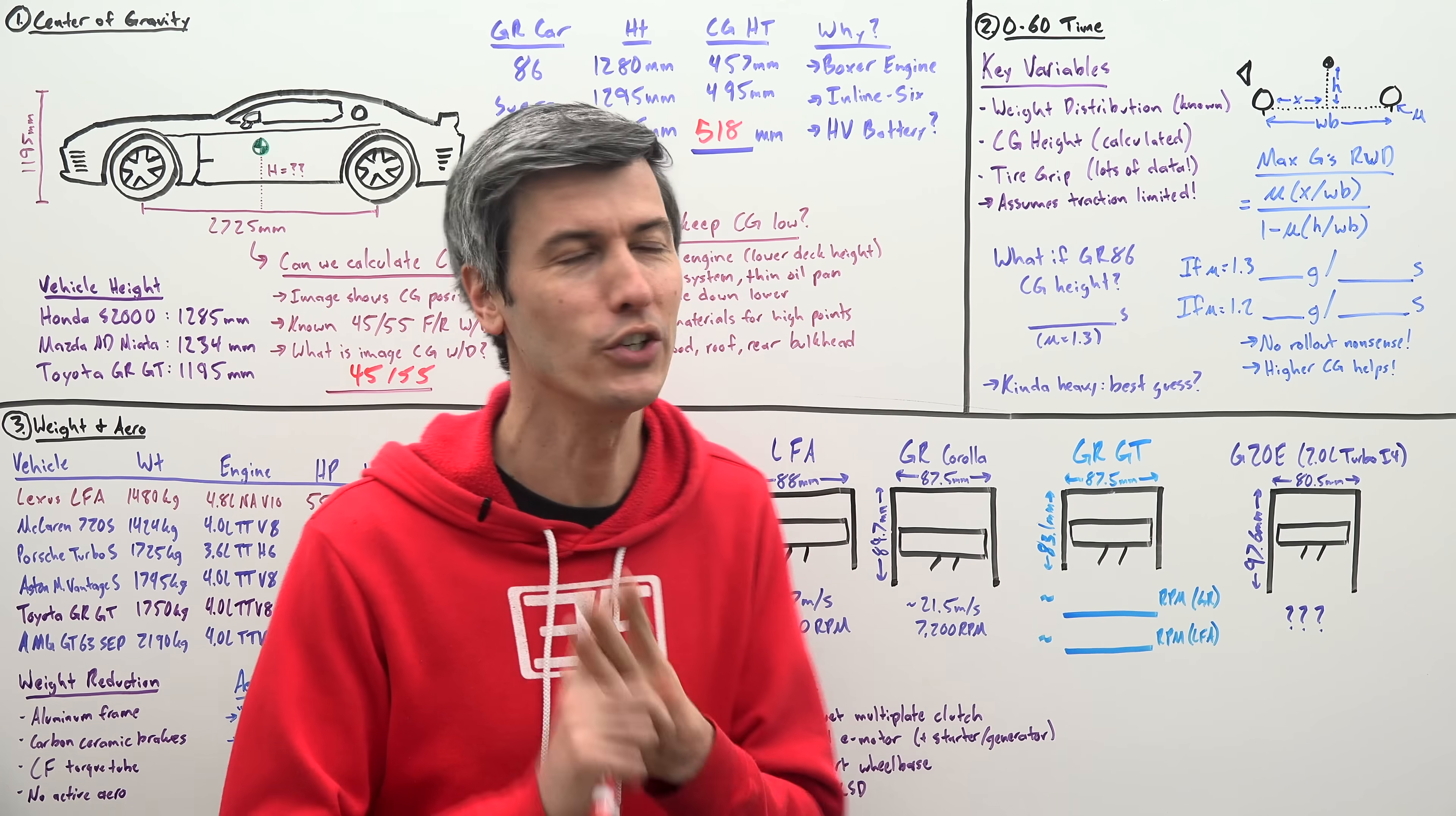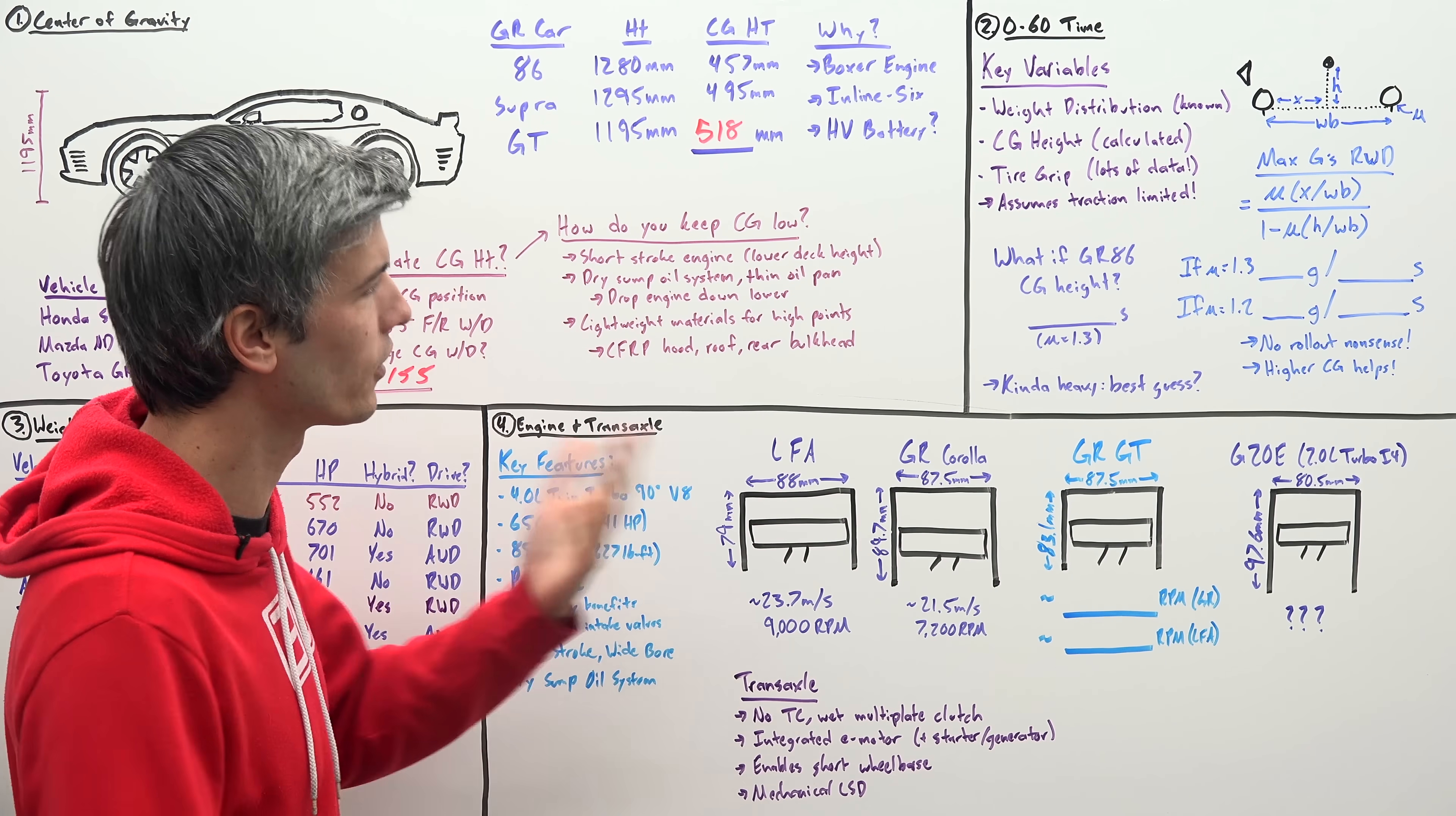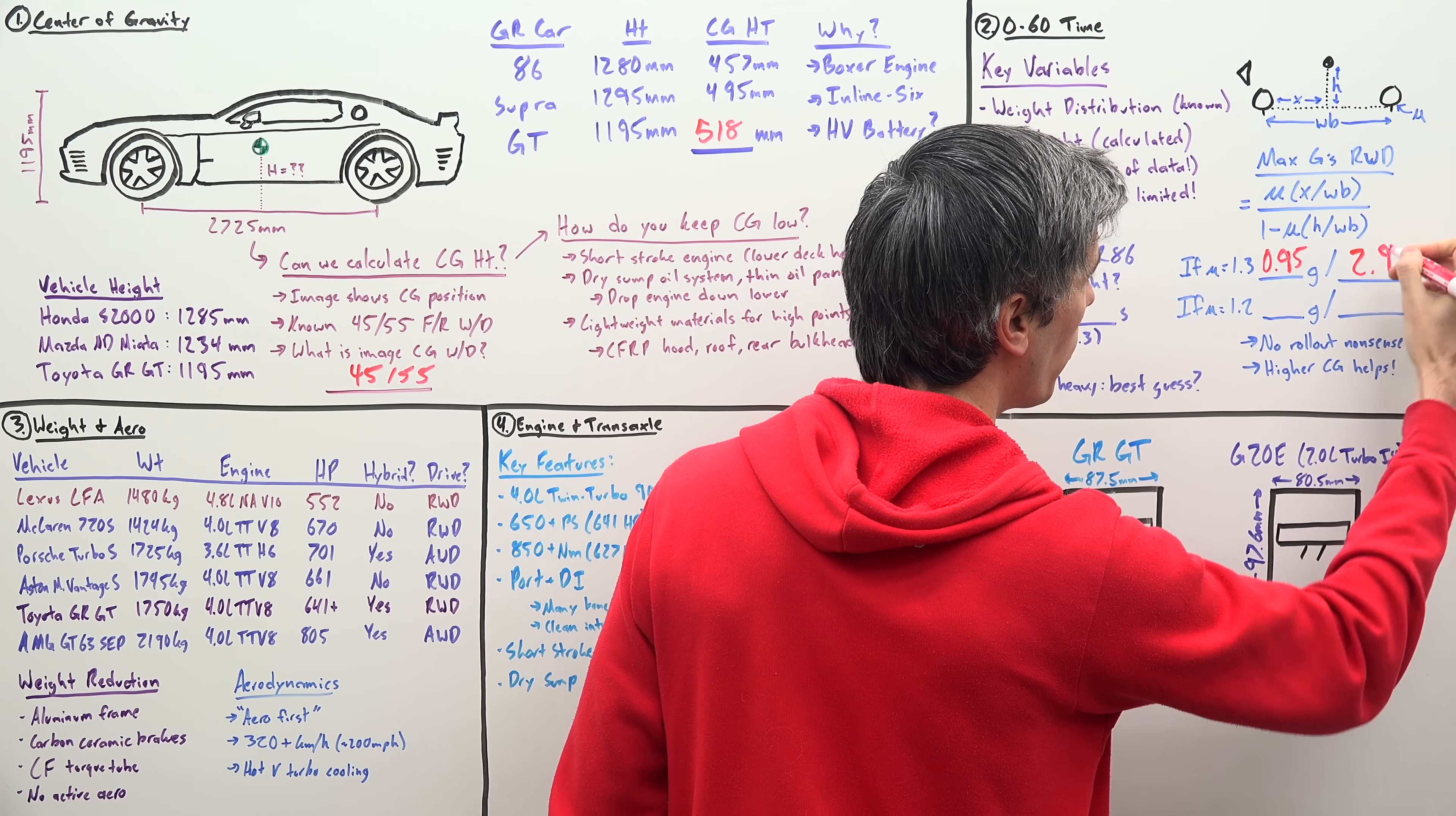Because the three key variables we need to know in order to estimate that 0 to 60 time are the weight distribution of the car, which Toyota provides us, the center of gravity height, which we have calculated, and the tire's grip, which there is plenty of data out there on. So we can use these assumptions and calculate that 0 to 60, assuming the vehicle is traction limited. But this is a supercar. It's got a lot of power. Let's assume for that 0 to 60, it is traction limited. So here's our equation to calculate in G's the maximum acceleration you could have for a rear-wheel drive vehicle with the given variables. If we assume our friction coefficient for our tires is 1.3, we could accelerate at 0.95 G's with a 0 to 60 of 2.9 seconds.